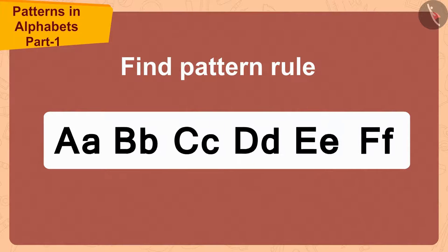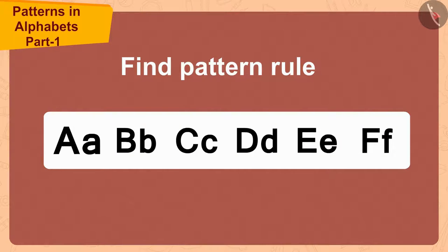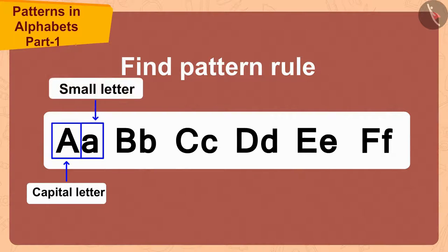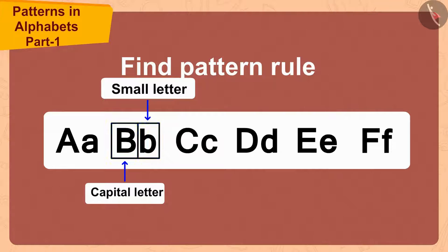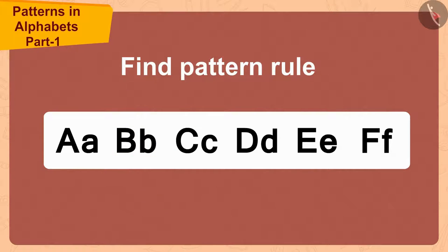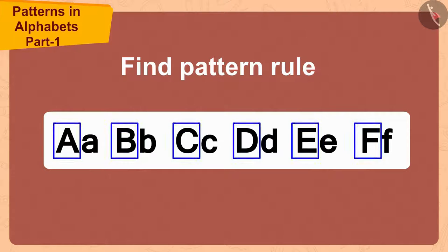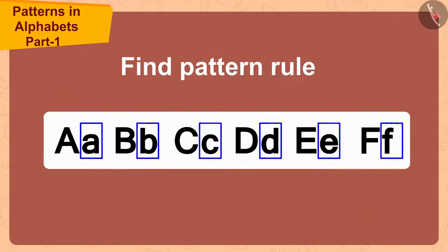Firstly, the first letter of the alphabet A is written in capital letter. Then, the small letter of the same letter is written. The same rule is then repeated for the next letter B. In this way, this pattern has been made by writing capital letters of every letter and then small letters.